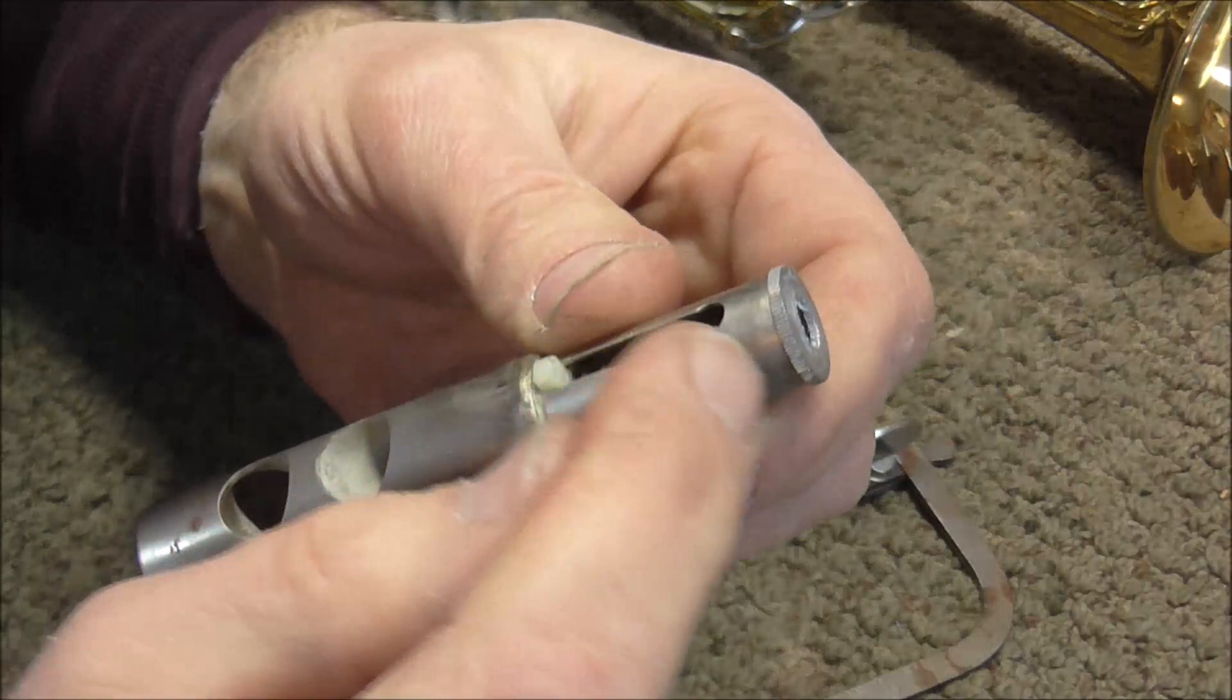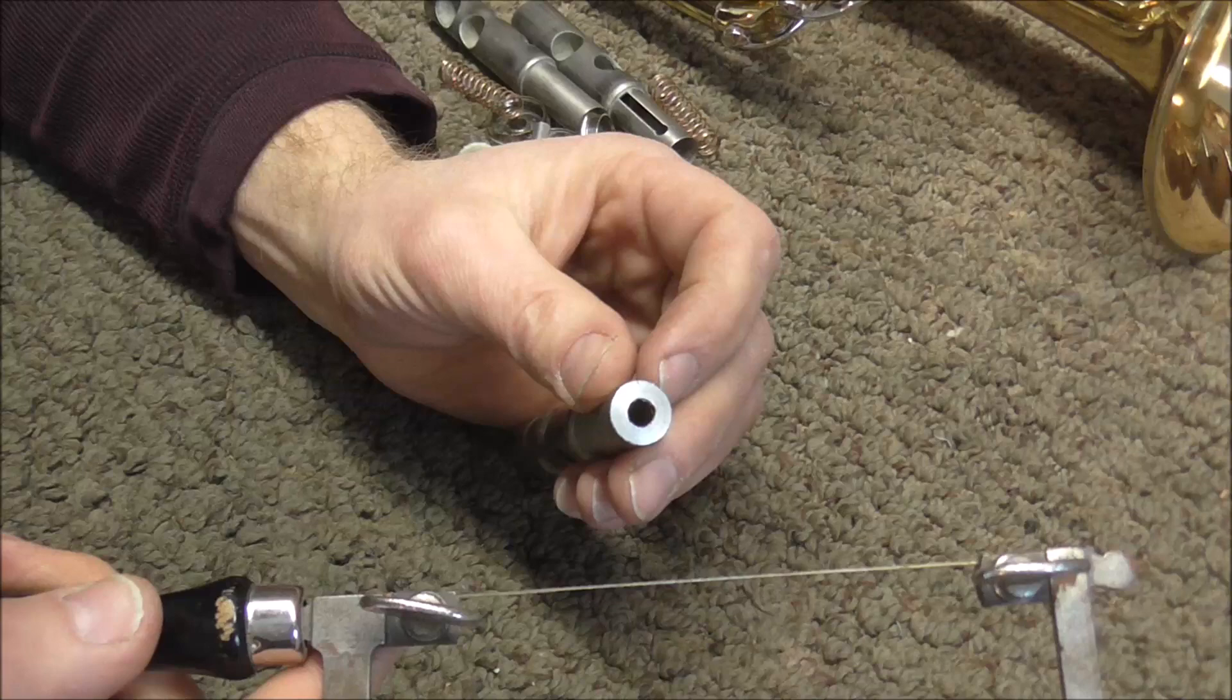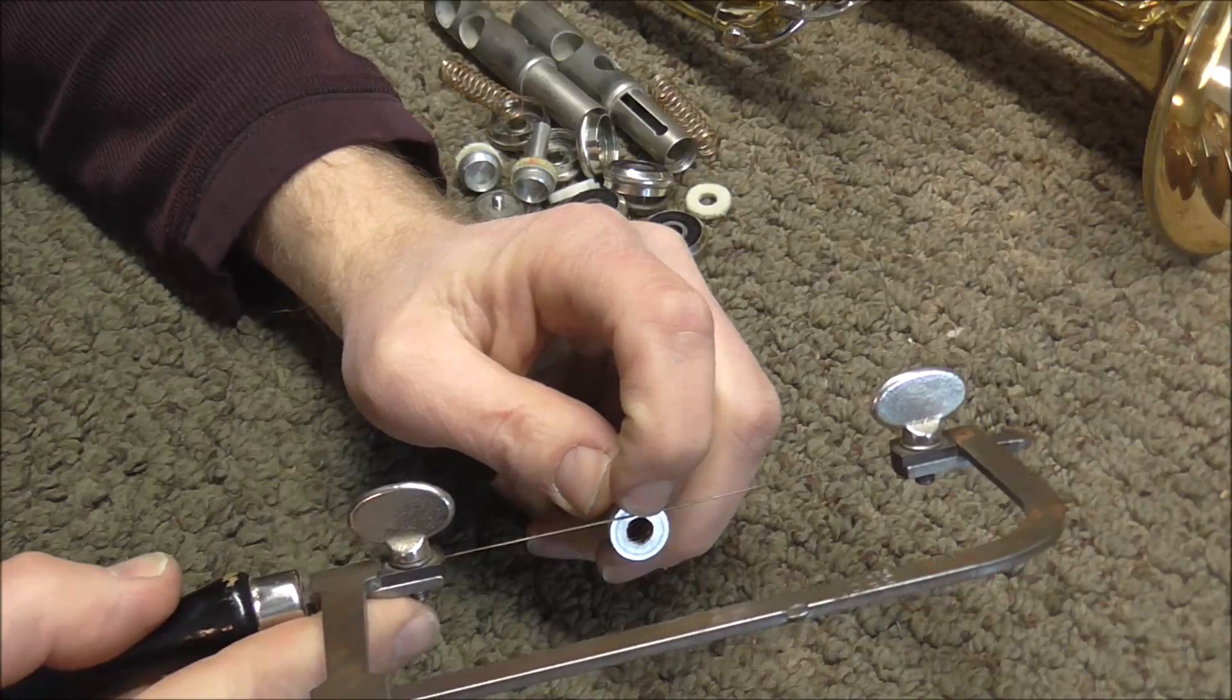When you do this job you just want to cut the valve stem. You do not want to cut into the valve itself. Take the saw and cut into the valve stem, and use your other finger to guide where the cut is.